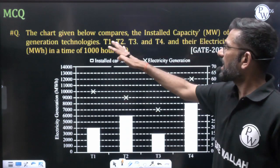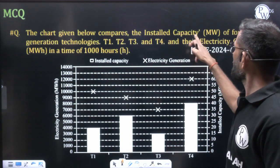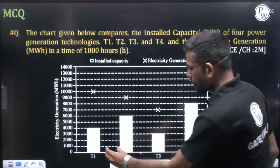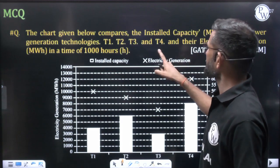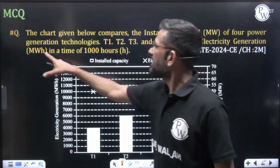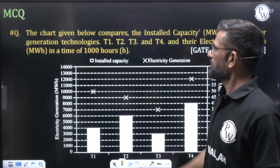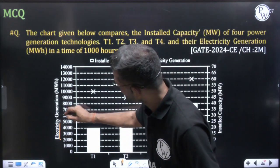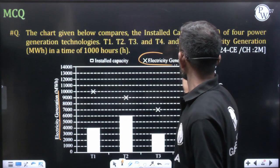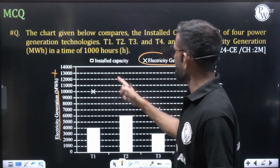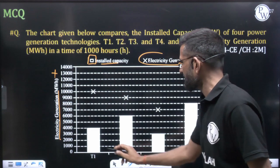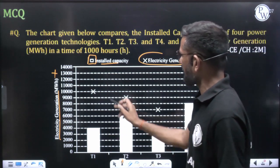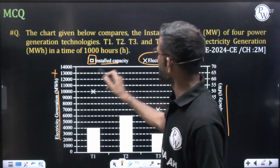The question states the chart given below compares the installed capacity in megawatts (MW) of four power generation technologies T1, T2, T3, and T4, and their electricity generation in MWh at 10:00 hours. Looking at the graph, the electricity generation in MWh is indicated by the cross markers on the left-hand side, while the installed capacity is shown by the bars on the right-hand side.